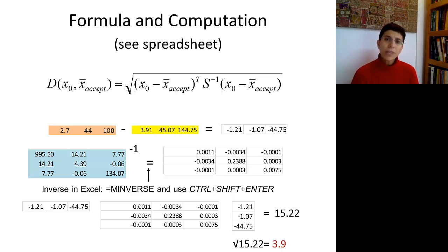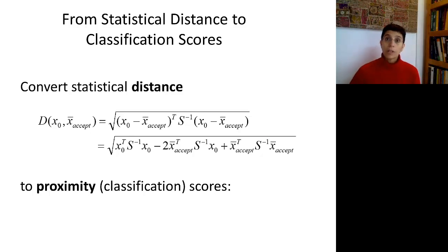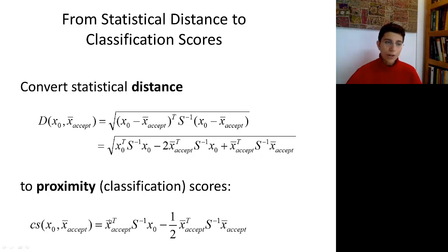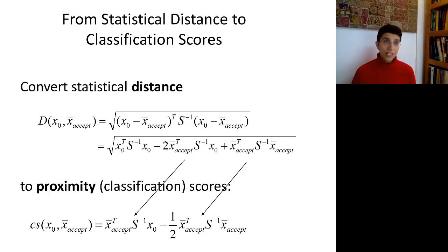When we run software, it typically doesn't give us statistical distances directly — it gives us classification scores, as seen in the previous video. There is, however, a very clear relationship between statistical distance and classification scores. Classification scores are proximity scores, so larger numbers mean you're closer to that group. If you open the brackets of the statistical distance formula, the formula for classification scores in discriminant analysis turns out to be very similar. This form also helps incorporate useful information such as misclassification costs, which we'll see in the third video.